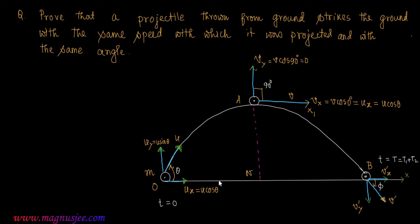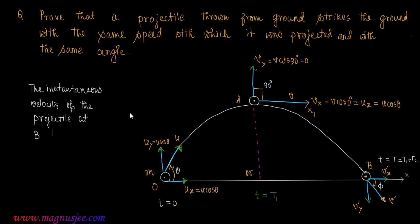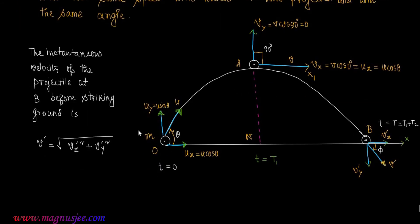We can draw a normal AN, and at point N, T equals T1, which is the time of ascent. The instantaneous velocity of the projectile at point B, just before striking the ground, is V prime = √(Vx prime² + Vy prime²), where Vx prime and Vy prime are the two rectangular components of V prime, which are perpendicular to each other.